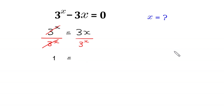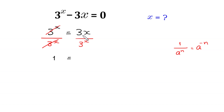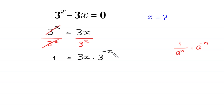According to the power rule, 1 over a to the power n is equal to a to the power negative n. We can write this 3 times x over 3 to the power x as 3 times x times 3 to the power negative x.